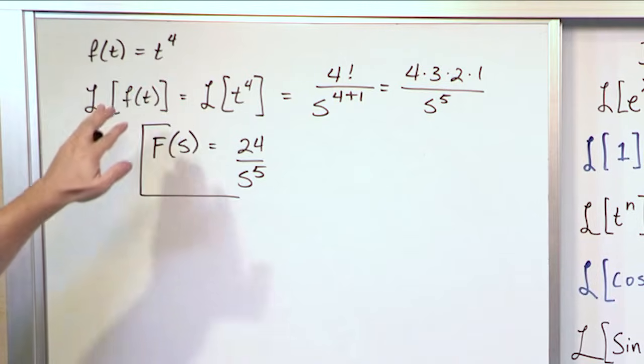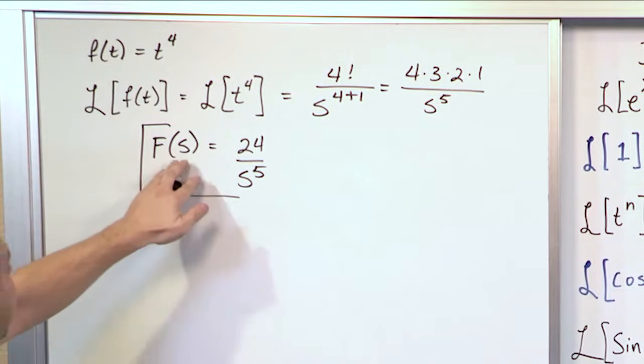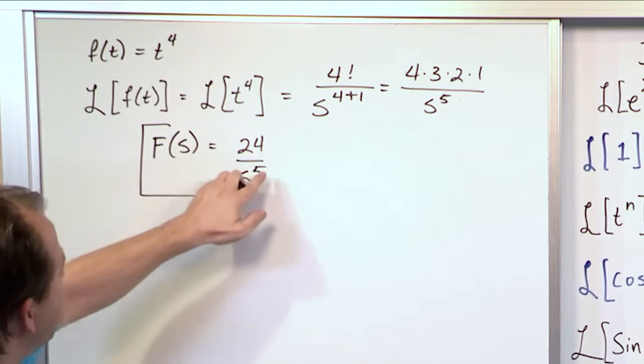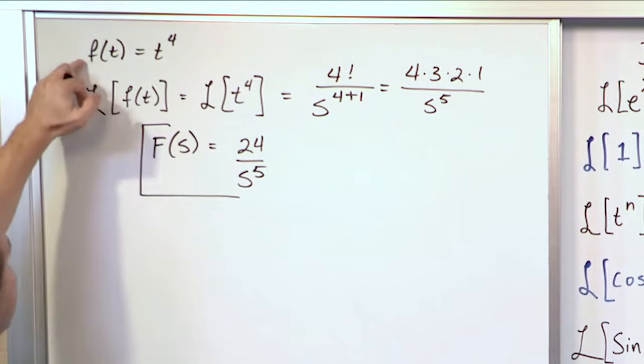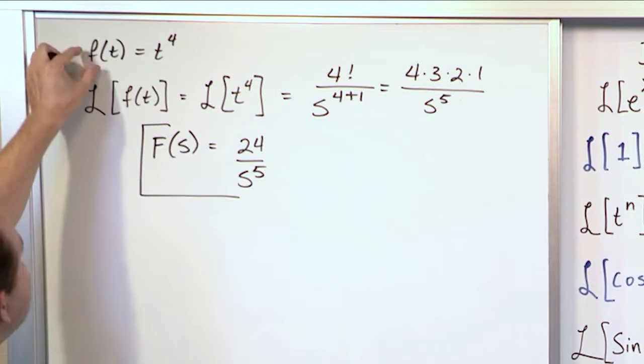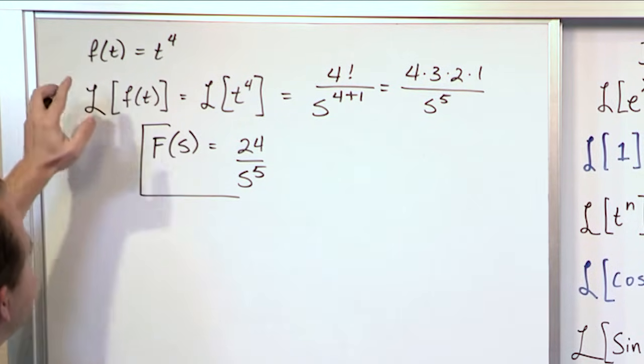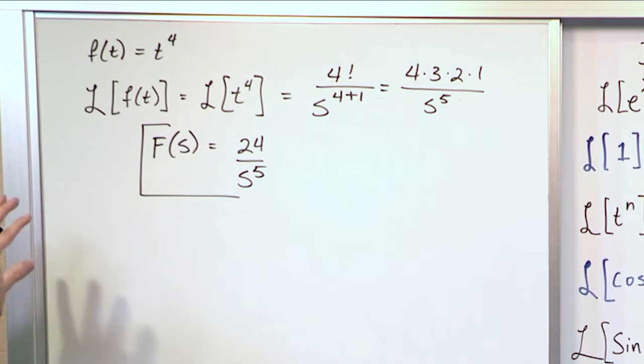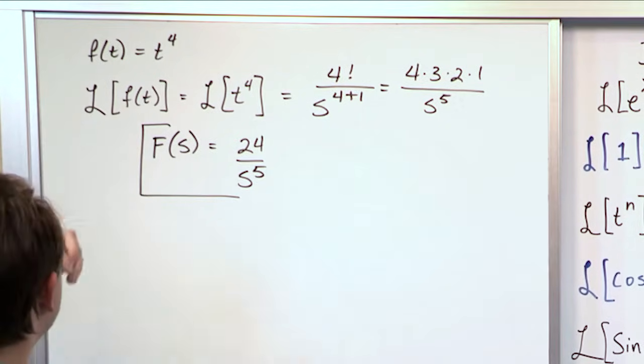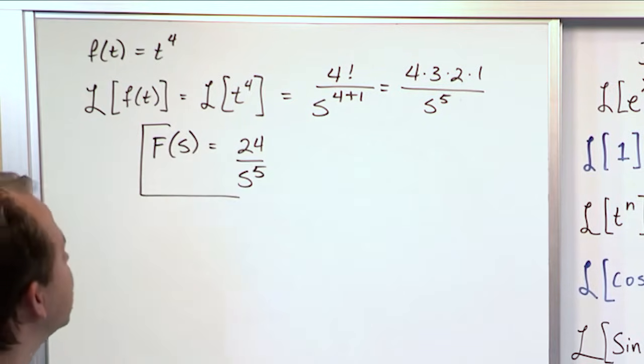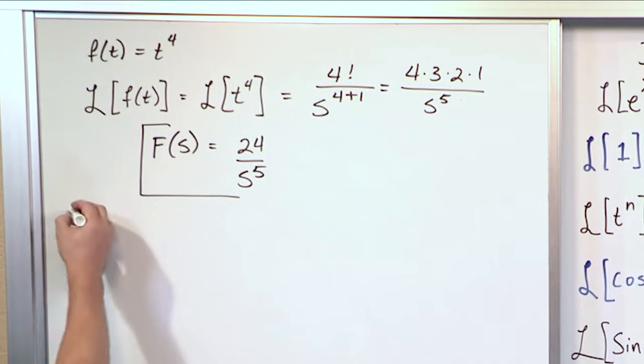So you have transformed from t to the fourth into the s domain, which gives you 24 over s to the fifth. And now you have a function of s. That's why we say function of time, function of s. The lowercase f goes with the capital F. That just lets you know that these are linked by this transform. We use that sort of symbology there. But really, it's its own independent function of s, which is representing the function but in the Laplace domain or in the s domain.